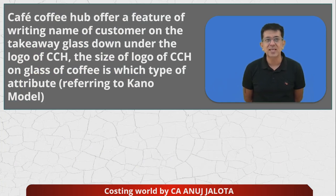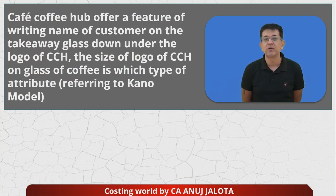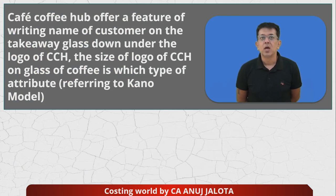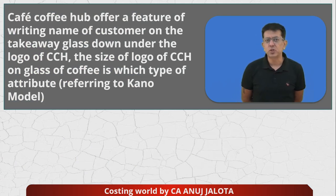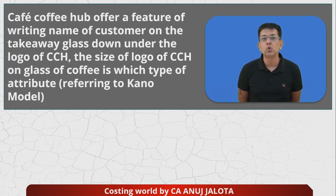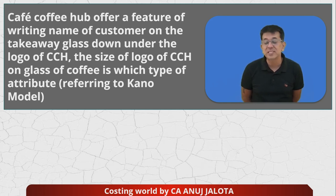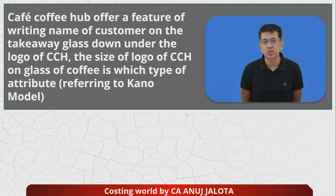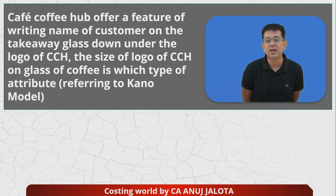The question is: Cafe Coffee Hub — I'll call that CCH — offers a feature of writing the name of the customer on the takeaway glass under the logo of CCH. The size of the logo of CCH on the glass is which type of attribute?